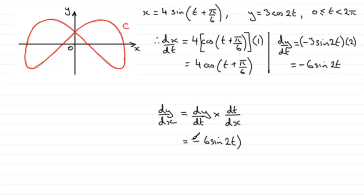And this is multiplied by the reciprocal of this. In other words, 1 divided by 4cos of t plus pi upon 6. And we should tidy this up a bit further.